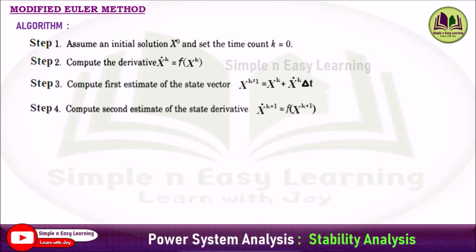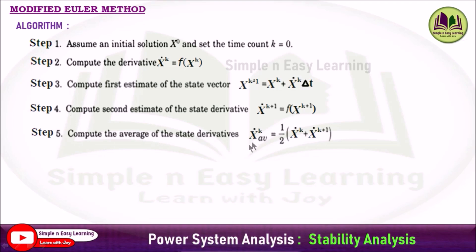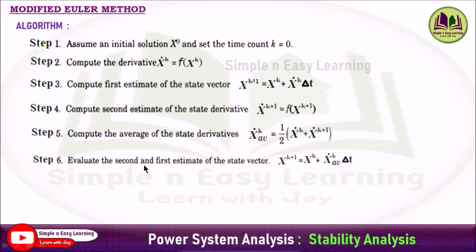Step 3: compute the first estimate of the state vector x power k+1, that is equal to x power k plus x-dot of k into delta-t, the change in time, and the first derivative of x power k. Step 4: compute the second estimate of the state derivative, that is x-dot of k+1, which is the function of x power k+1, the first estimate. From the first estimate you will be getting the second estimate of the state derivative. Step 5: compute the average of state derivatives, where the average value equals x-dot of k plus x-dot of k+1 divided by 2.